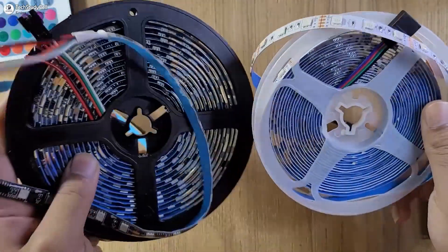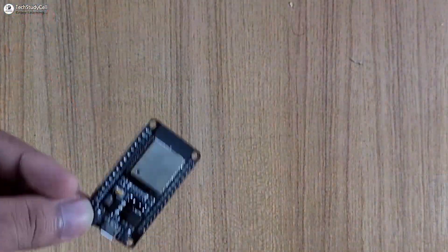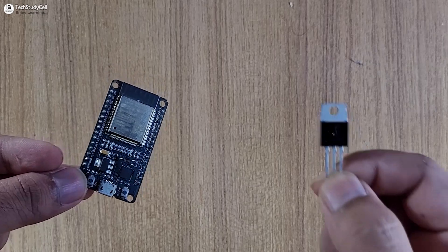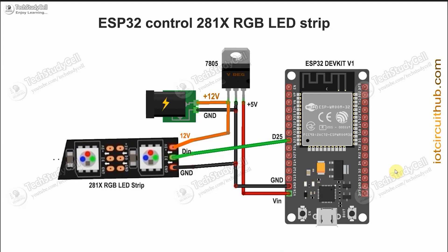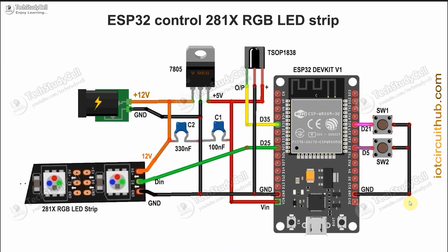If you are using a 5V LED strip, then you just need an ESP32, nothing else. But for a 12V LED strip, you have to add a voltage regulator to drop down 12V to 5V for the ESP32, as per the circuit. If you want to add more features like manual control or IR remote control, then you can refer to this circuit. Here I have connected two push buttons — one for controlling the LED and another to change the mode. I have also connected the IR receiver, and two optional capacitors to make the circuit more stable.